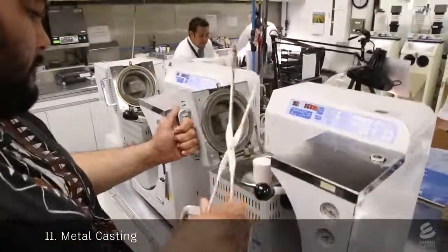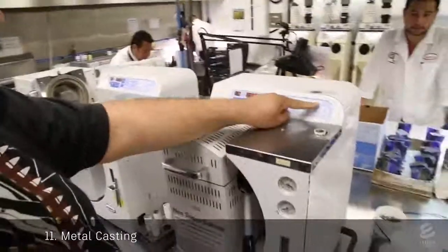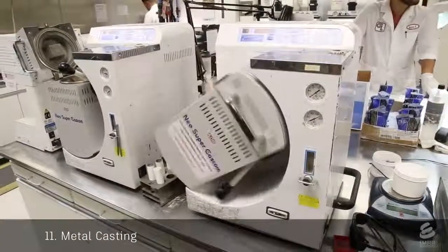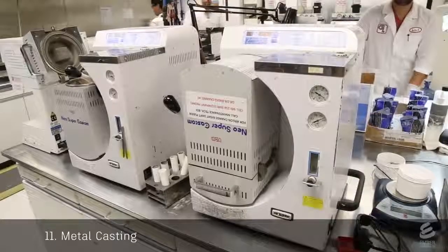Directly from the oven, the investment is inserted into a vacuum casting machine. Already inside is a precious metal alloy. The machine flips over and a vacuum pulls the molten metal into the void space.